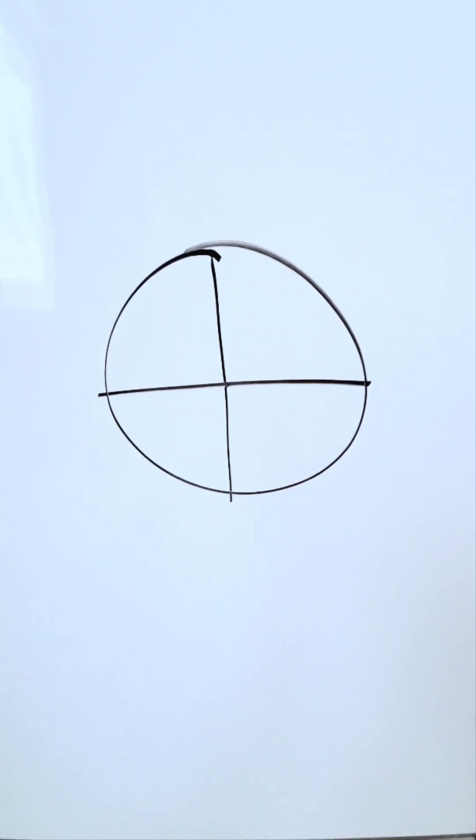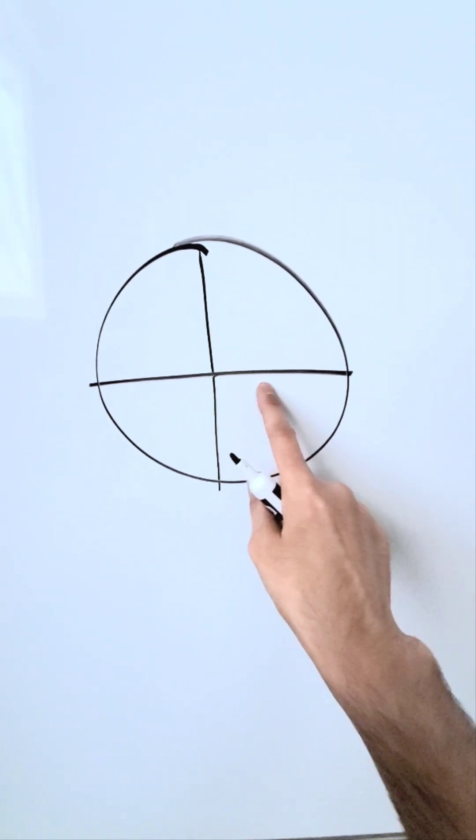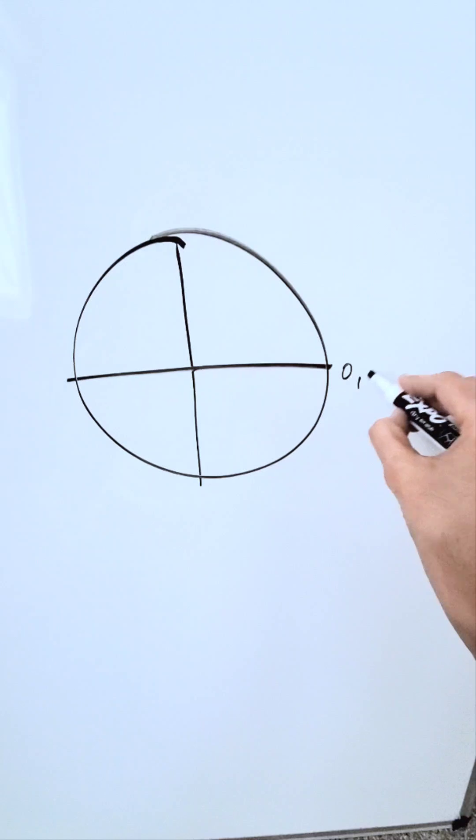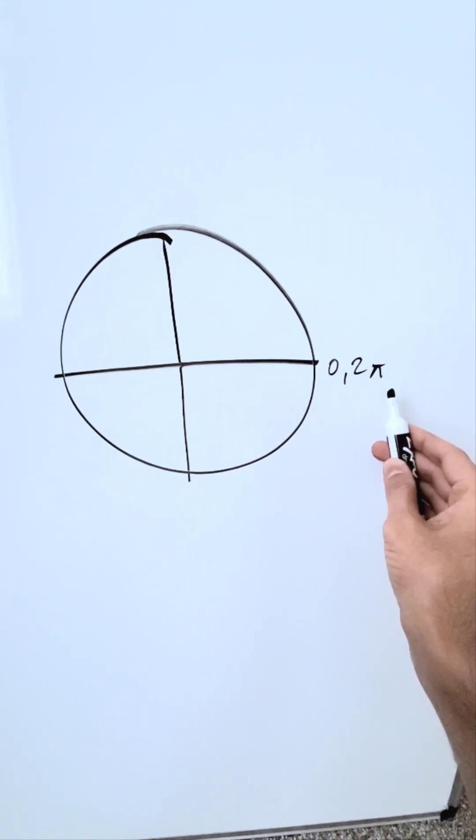Let's examine all of the angles in radians that we should know by memory. Starting on my x-axis, I'll have 0 or 360. You write that as 2π.